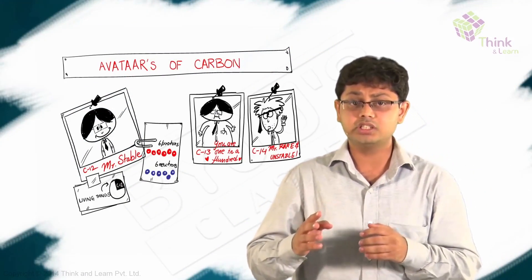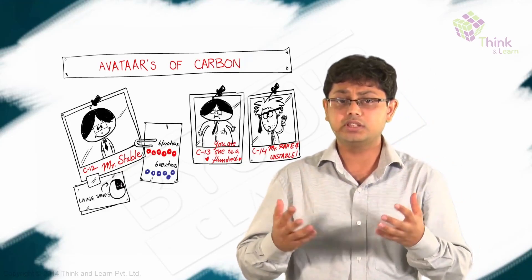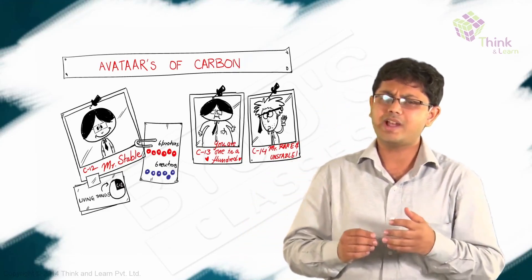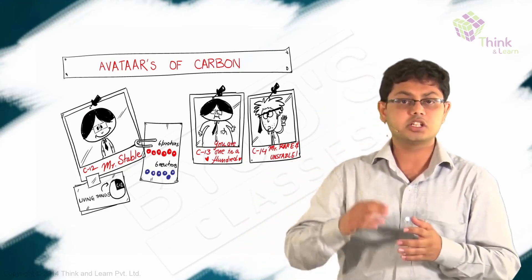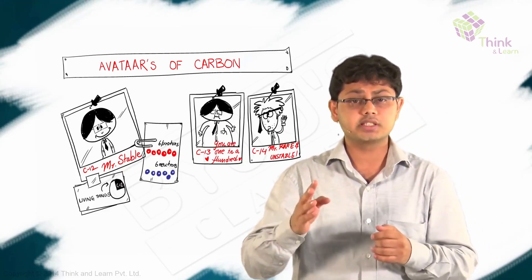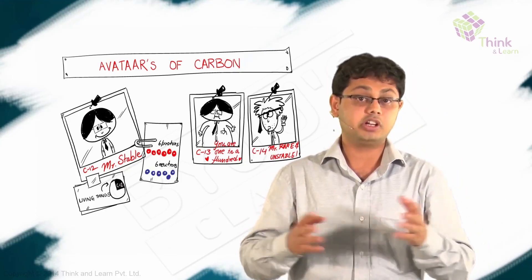This is a very important element because 25% of all living things are made out of carbon. Why carbon-12? Because it's got 6 protons and 6 neutrons. So 6 plus 6 equals 12. Am I not intelligent?